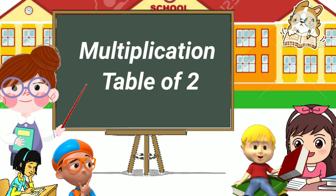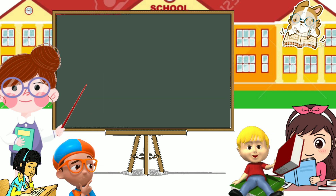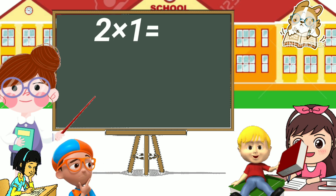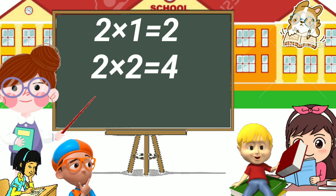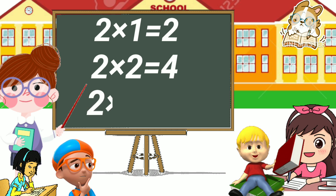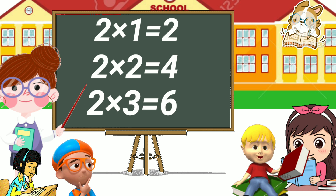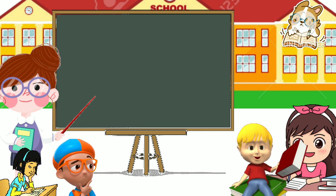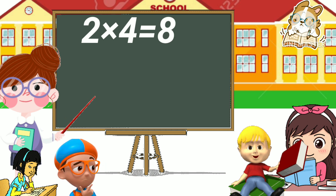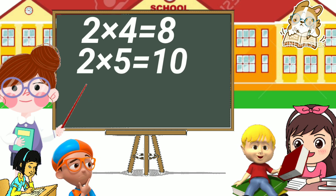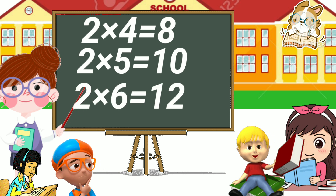Multiplication table of two. Let's learn the multiplication table of two. Two one has two, two two has four, two three has six, two four has eight, two five has ten, two six has twelve.